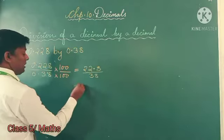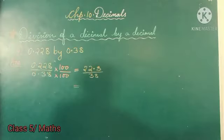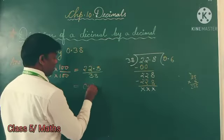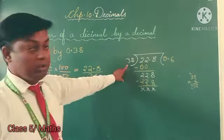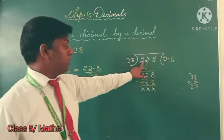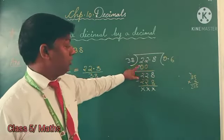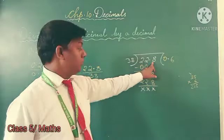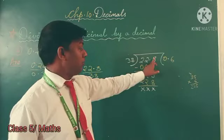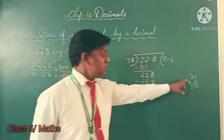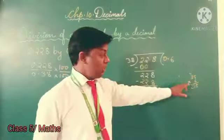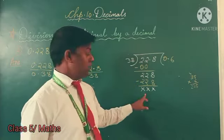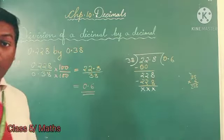After dividing, we will get the answer. So the answer is 0.6. You can see I have solved this number. I have written 6 here and I subtracted 228 and got remainder 0, so the answer is 0.6.